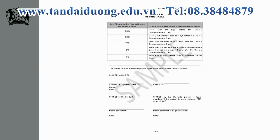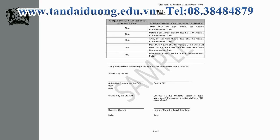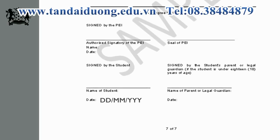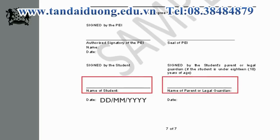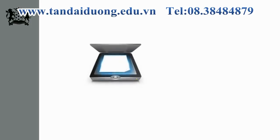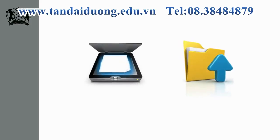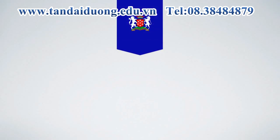If everything is in order, make sure you double-check this portion to ensure that your name is correct, and the date should be input in the specified format. For those of you who are below 18, please make sure that both you and your parent or legal guardian sign this portion as well. Once you have signed off, scan and upload the signed contract on this webpage below this video. Thank you for signing up with OSAC International College.